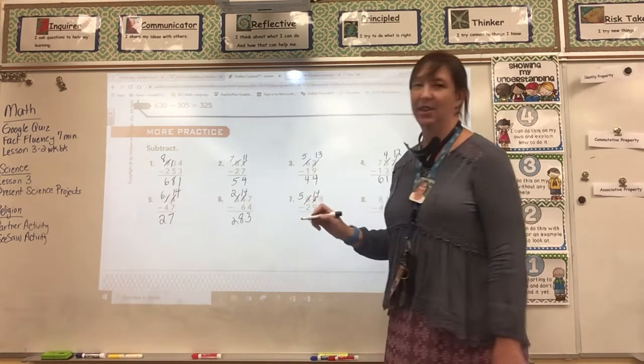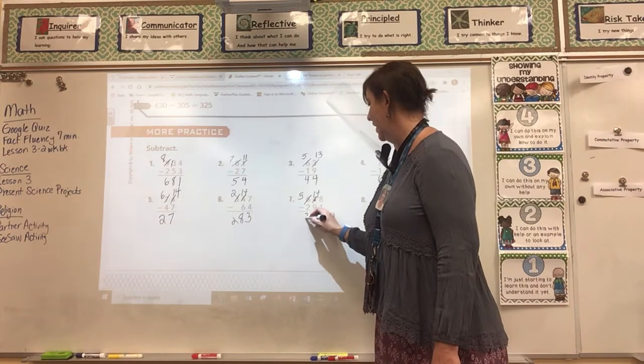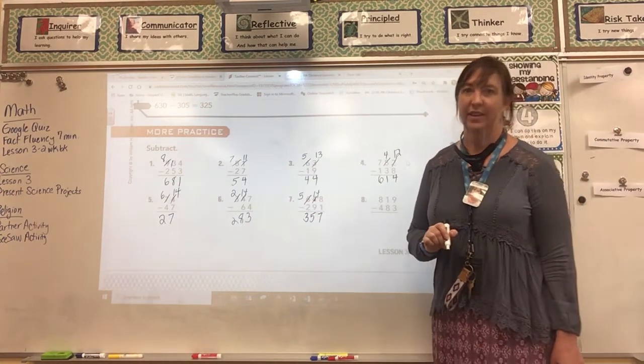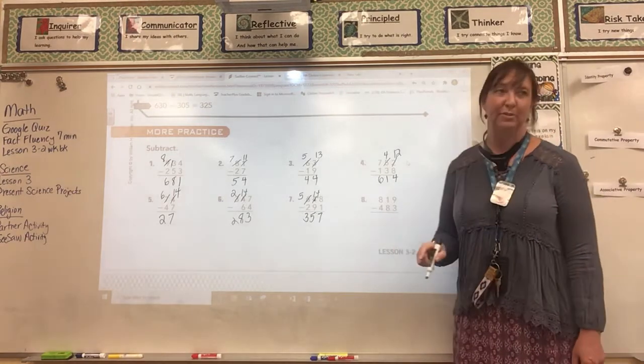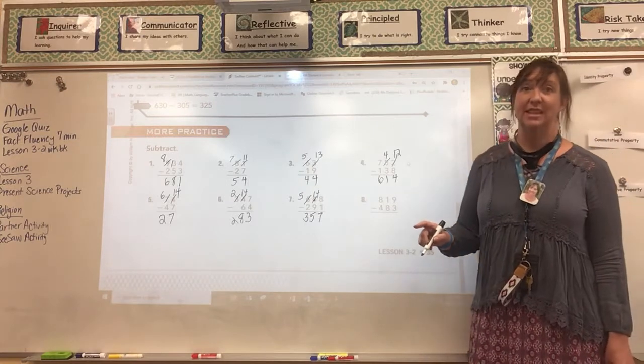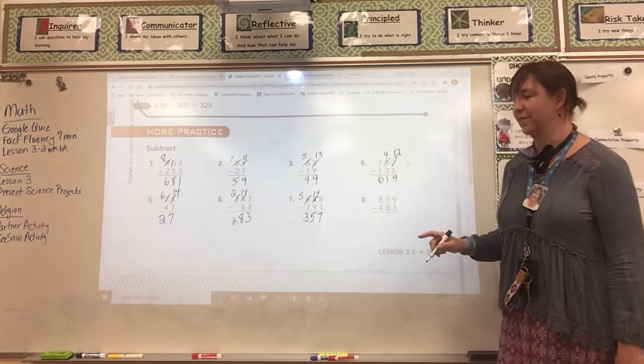And 5 minus 2 is 3. And so I have 357. So the last problem that we're going to do together is number 8. Did everybody get a chance to write these down with me as we did them together?